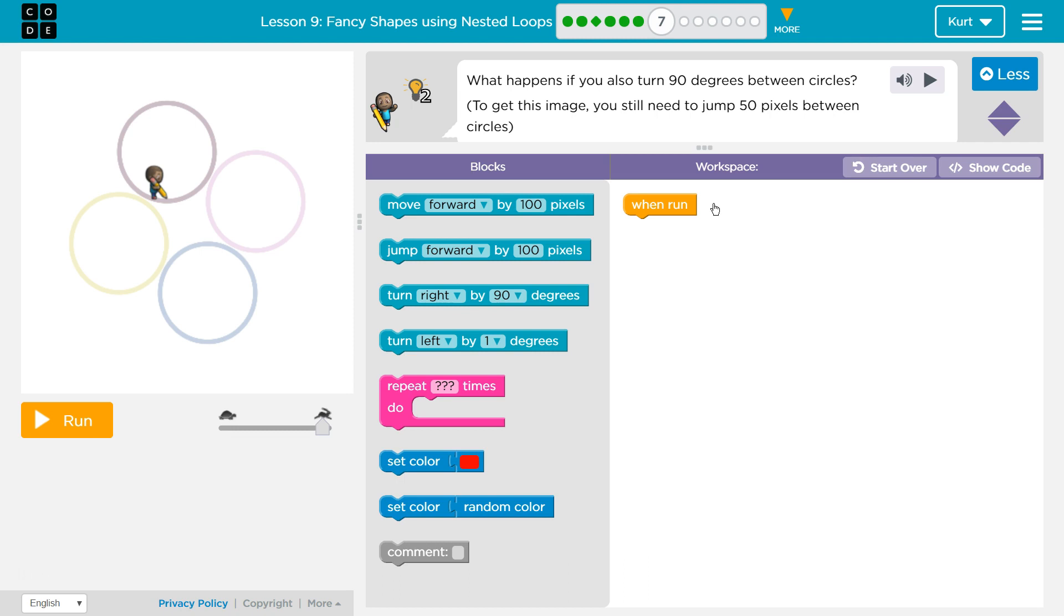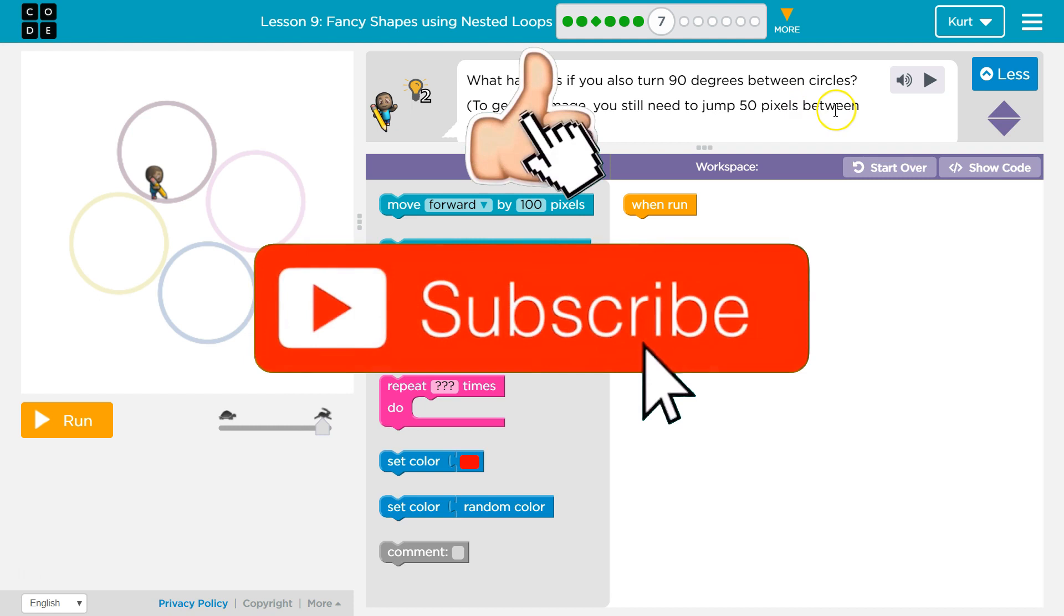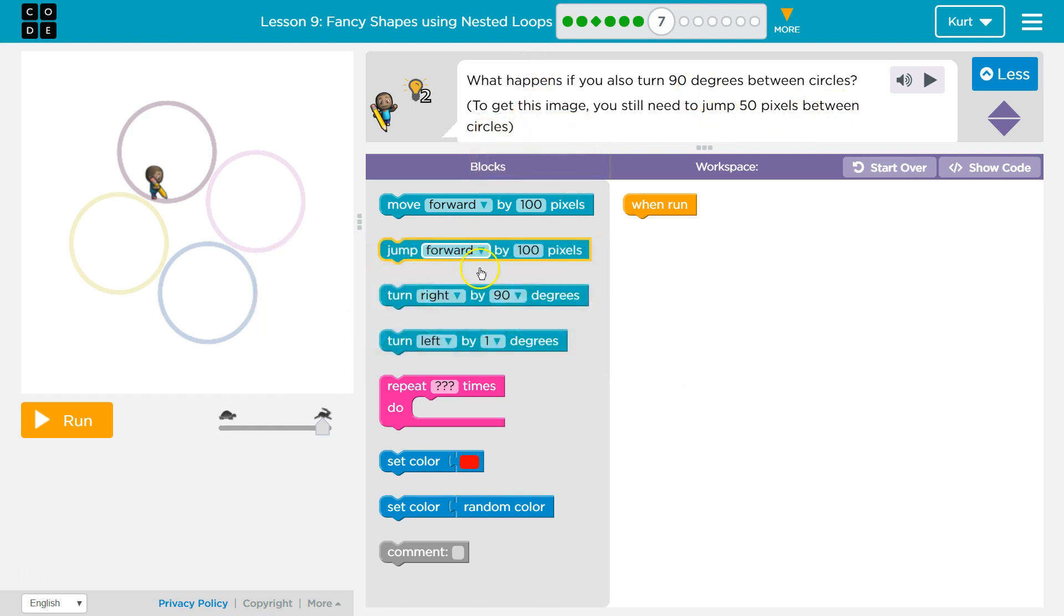What happens if you also turn 90 degrees between circles? Well, I bet you get this. To get this image, you still need to jump 50 pixels between circles. So I guess it's similar to last time. And remember, how do you draw a circle?